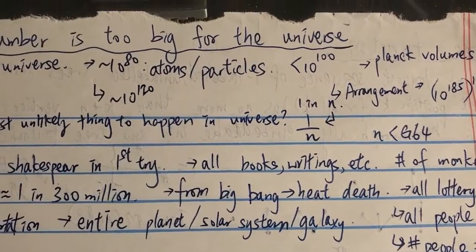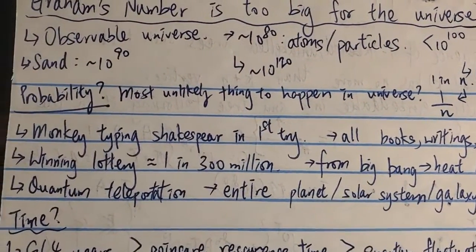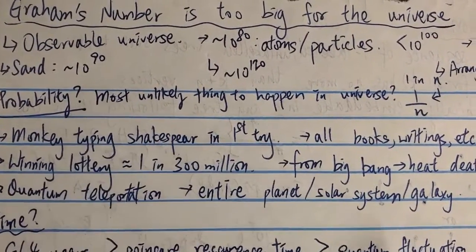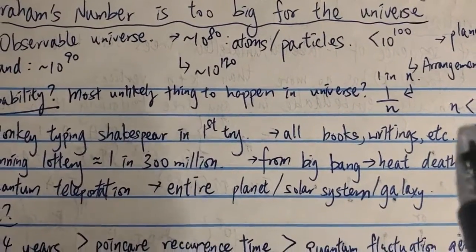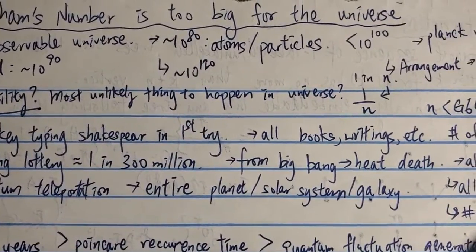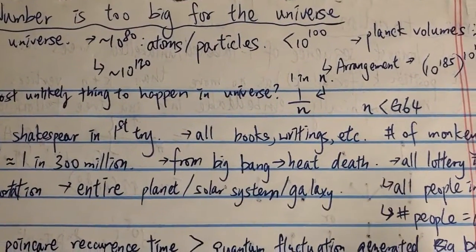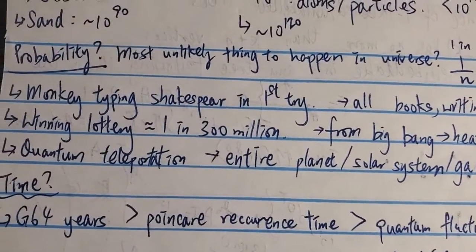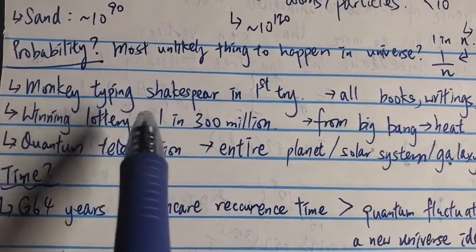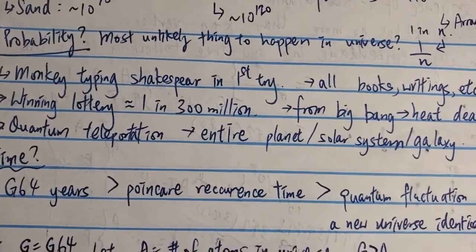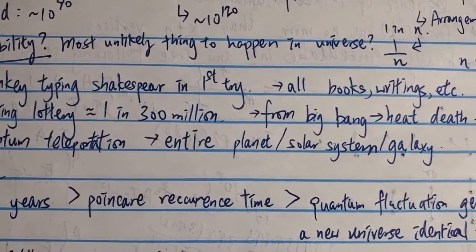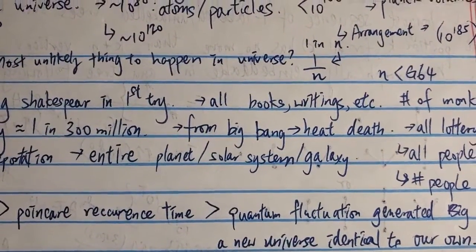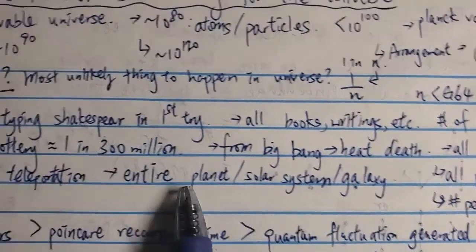So physically, if you count things or even arrangements of something, Graham's number is way too big for the universe. What about probability — can you beat Graham's number with probability? What's the most unlikely thing to happen in the universe? We'll talk about 1-in-n. For example, a monkey typing Shakespeare on the first try — in terms of 1 over n, that n would still be far smaller than g64.